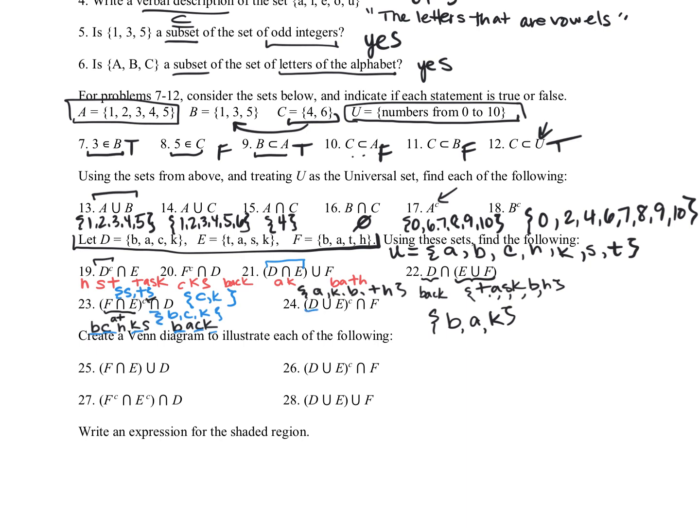And for twenty-four, we have the union of D and E together. So let's just put those all together. B, A, C, K is D. E is T, A is already there, S, K. And we want to intersect with F. F is B, A, T, H. So for the final answer, their intersection, what do they both have? They both have a B, they both have an A, and they both have a T. As I look at that, oops, I actually made a mistake here.